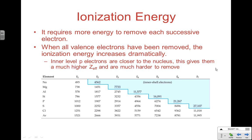Once we've removed our valence level S and P electrons and we're now dealing with an inner level P as our highest level, those electrons are going to be much closer to the nucleus. By Coulomb's law, they're going to be significantly harder to remove — remember, distance kills attractive forces. The less the distance, the stronger the attractive forces. That's why we see this big jump: when we've lost our valence level electrons from either an S or a P, we're now dealing with an inner level P which is significantly closer to the nucleus and much harder to remove.